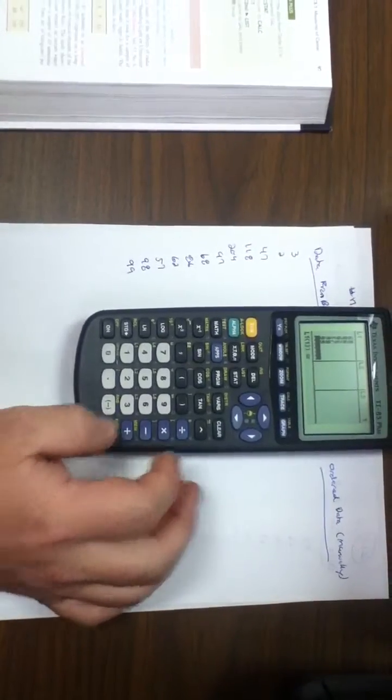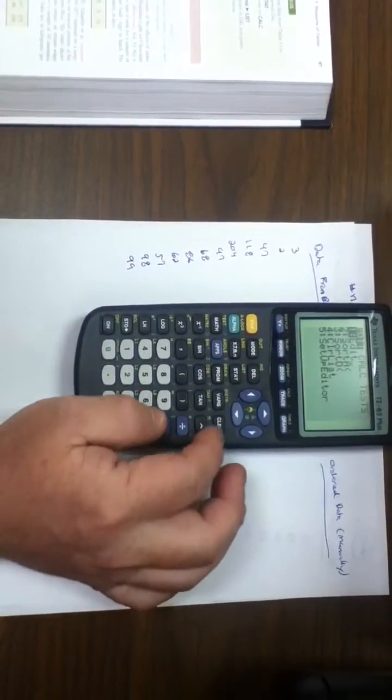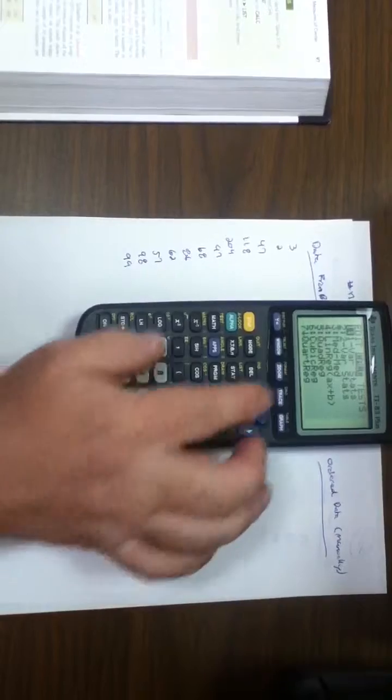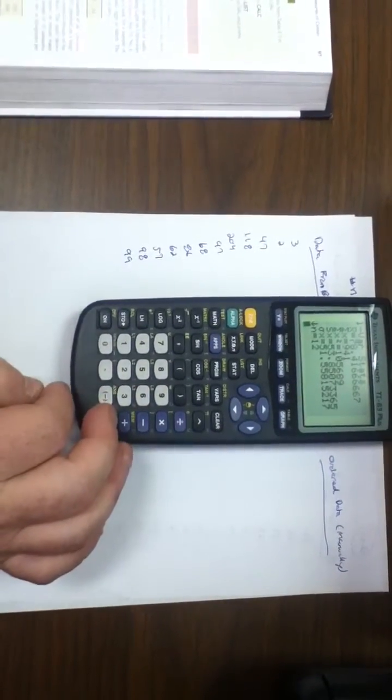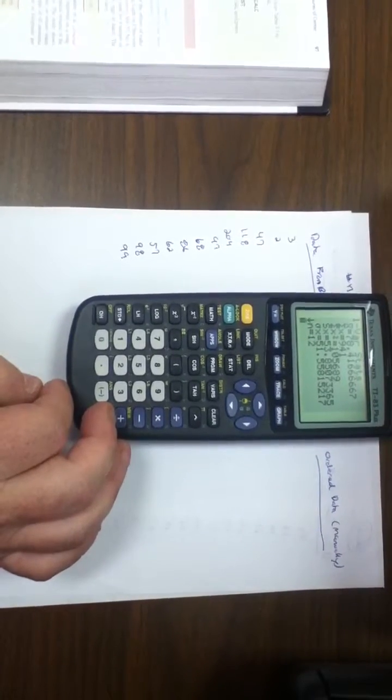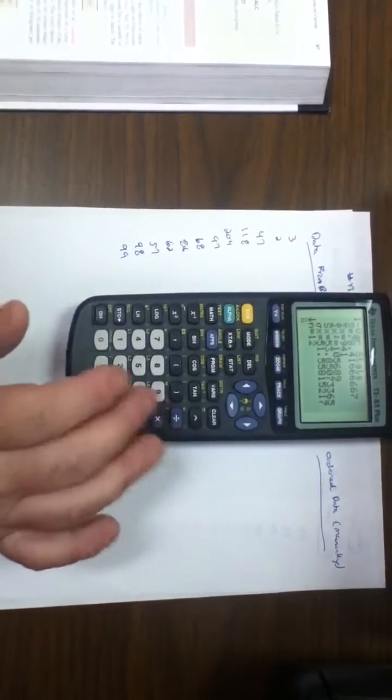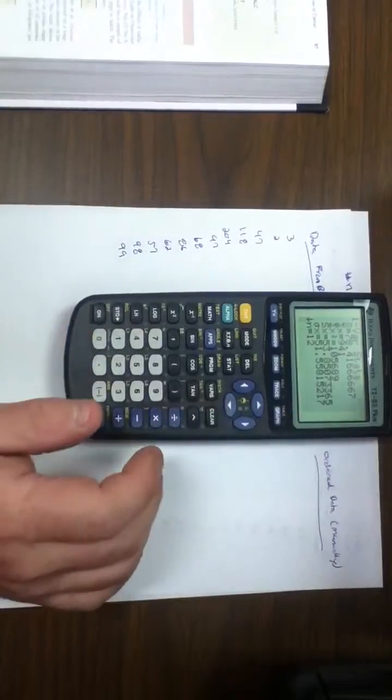Once we've got all the information typed in, hit your stat button, arrow over to your calc menu, select one for var stats, and hit enter. If you have the TI-84, you might have to hit a calculate button. Ultimately, you should have this screen with your descriptive statistics.